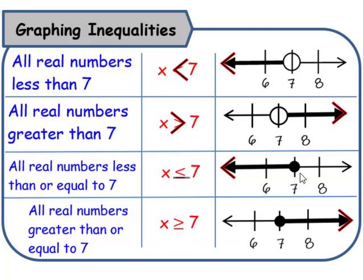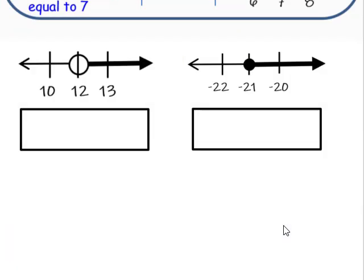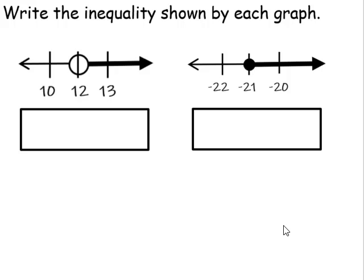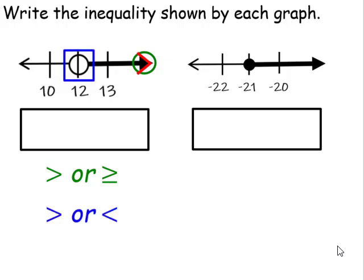Let's write the inequalities shown by each graph. First, take a look at the direction of the bold arrow — we can see it's facing the right direction. Therefore, our inequality will look like greater than or greater than or equal to. When we take a look at our circle and it's an open circle, open circles are either greater than or less than without the equal sign. Therefore, our inequality symbol is going to be greater than. I'm going to use x, and the open circle is located at 12.